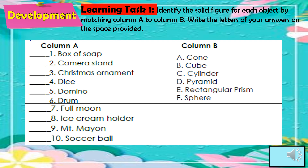For learning task 1, identify the solid figure for each object by matching column A to column B. Write the letter of your answer on the space provided. Column A includes: box of soap, camera stand, Christmas ornament, dice, domino, drum, full moon, ice cream holder, Mount Mayon, and soccer ball. Column B options are: A. cone, B. cube, C. cylinder, D. pyramid, E. rectangular prism, and F. sphere.